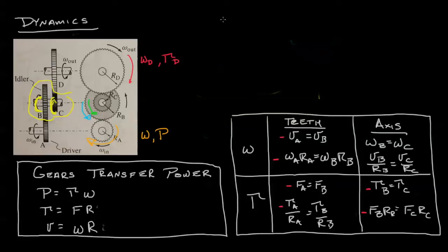To deal with gear trains, we first look at what's happening with the first gear, gear A, and then we figure out what's happening with gear B, gear C, and then gear D.